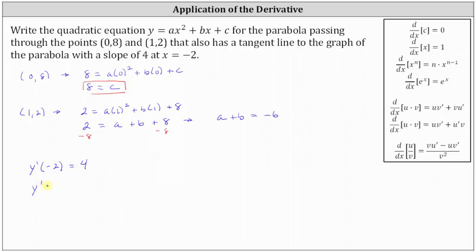Let's find y prime, which is the derivative of ax squared plus bx plus c with respect to x. The derivative of ax squared is 2ax, plus the derivative of bx which is b, plus the derivative of c which is 0 since c is a constant. Substituting 4 for y prime and negative 2 for x gives us 4 equals 2a times negative 2 plus b, which simplifies to 4 equals negative 4a plus b.